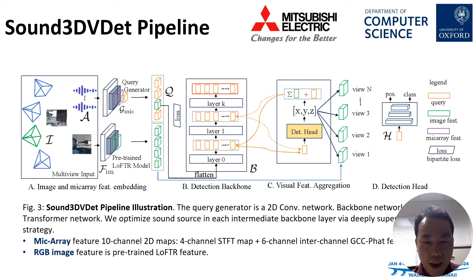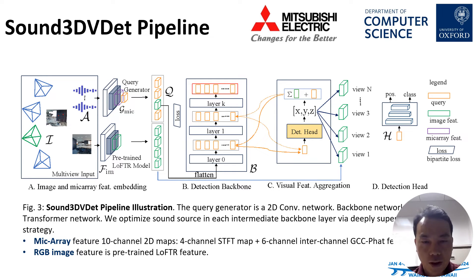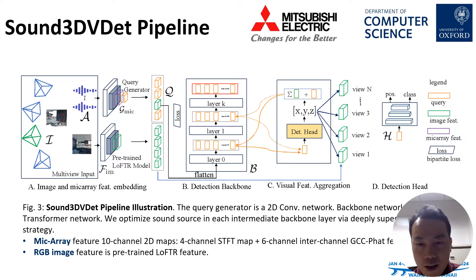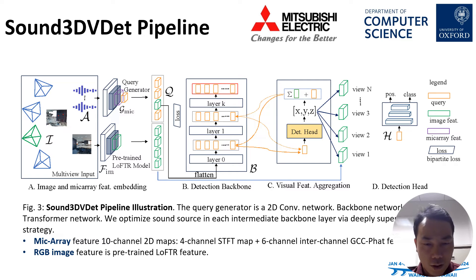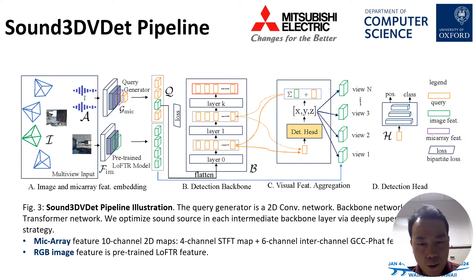Here is the Sound 3D wave data pipeline. For the given 4-channel microphone audio signal, the query generator takes it as input and outputs the initial sound sources. These are further fed to a transformer-like detection backbone network for further optimization. Finally, we use a detection head to decode the sound source representation into its corresponding spatial position and semantic label. For the microphone audio signal, we extract 10-channel 2D maps: the 4-channel STFD maps plus the 6-channel inter-channel GCC phase features. The RGB images use pre-trained LoFTR features.